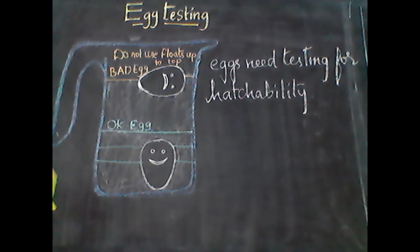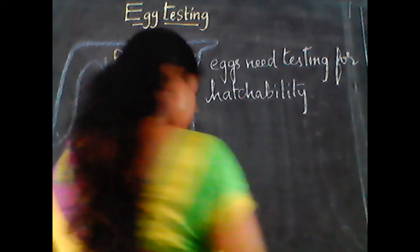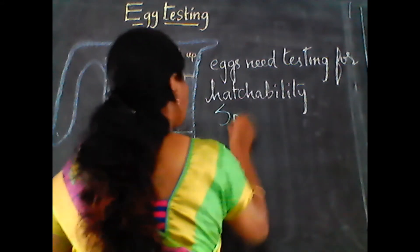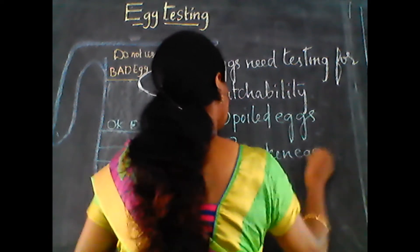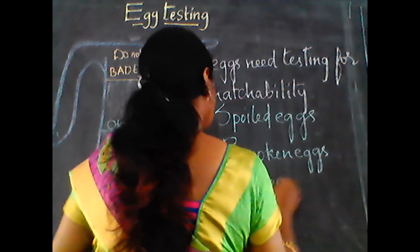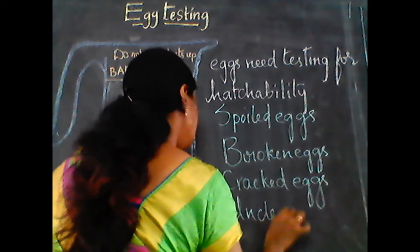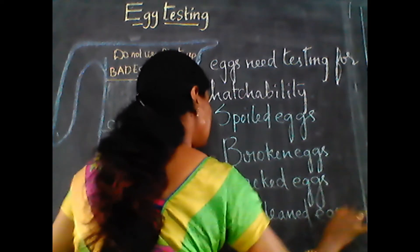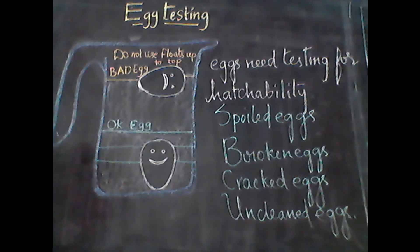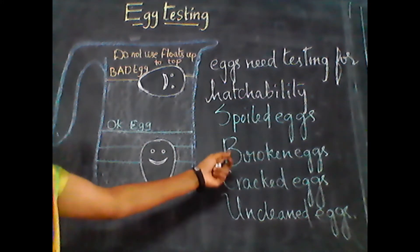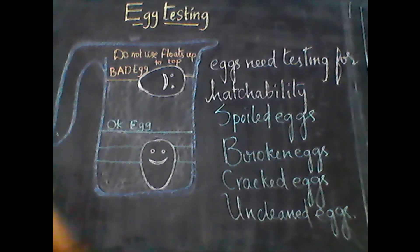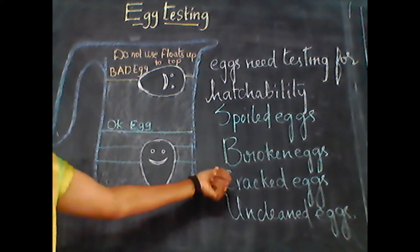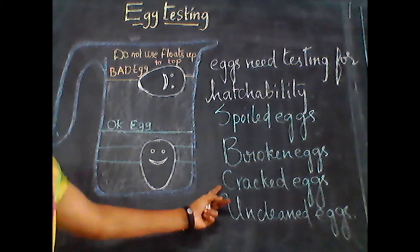Spoiled eggs, broken eggs, cracked and unclean eggs are not suitable for hatching. Hence, they are to be properly identified and disposed of, as they are not suitable for hatching.